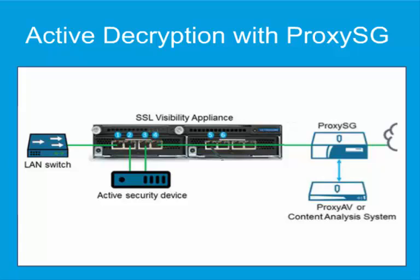In this configuration, the ProxySG intercepts SSL traffic, and the SSL Visibility Appliance uses the ProxySG's intermediate certificate to decrypt the SSL traffic, sending it to the active security device. The SSL Visibility Appliance will also decrypt traffic intercepted by the ProxySG. Anything configured to bypass, such as financial or health sites, will not be decrypted. The active security device may find some traffic to be bad, for example containing a virus or malware, in which case it will get blocked, dropping the flow. If the active device returns the traffic back to the SSL Visibility Appliance, the appliance assumes it to be good, or virus-free, and re-encrypts the traffic, sending it to the destination.